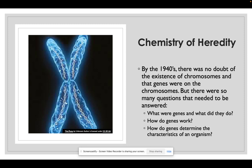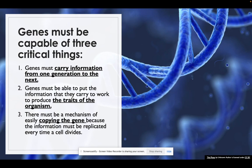Now we know that genes must be capable of doing three things. First, genes must carry information from one generation to the next. Second, genes must be able to put the information that they carry to work to produce traits or phenotypes of the organism. And last, there must be a mechanism of easily copying the gene because information must be replicated every single time a cell divides.